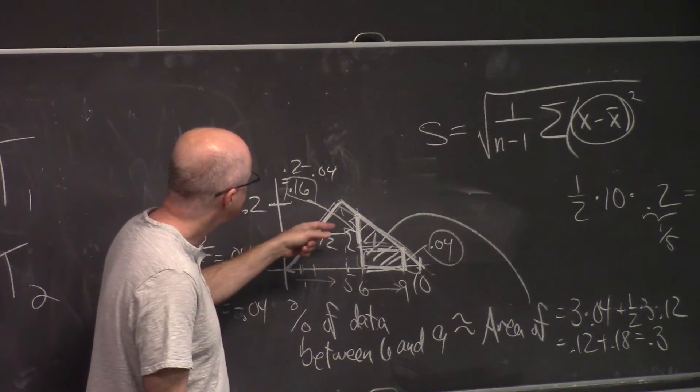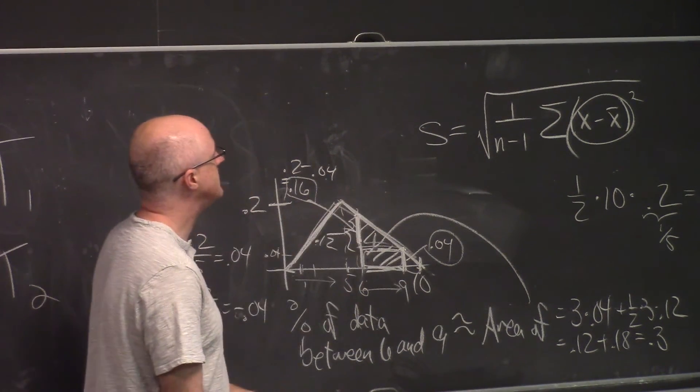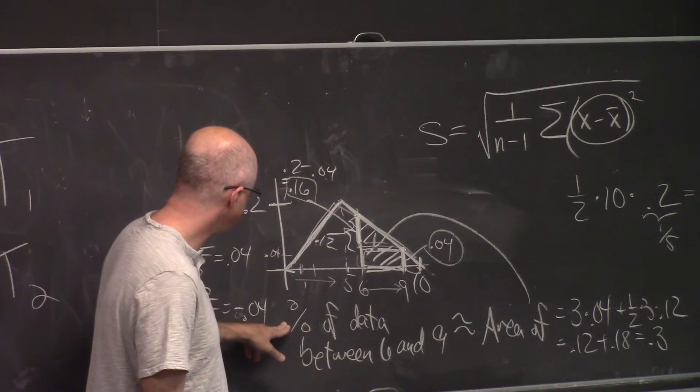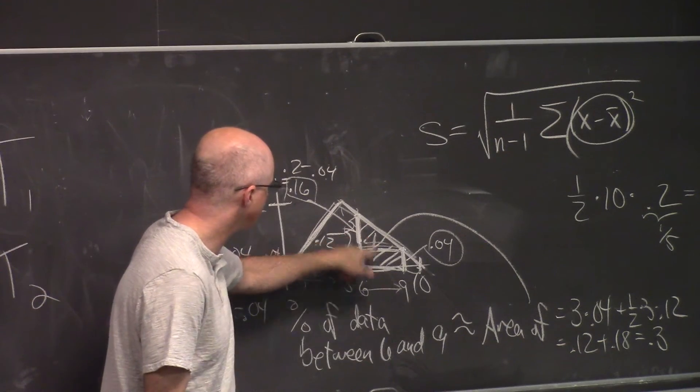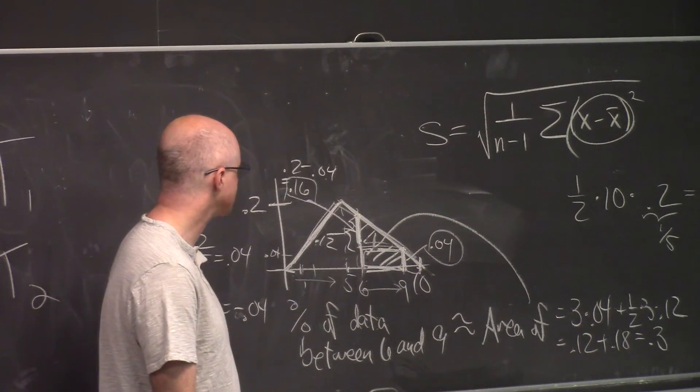The point is to calculate the approximate percentage of data that's between two numbers, find the area under the curve between those two numbers as an approximation for the answer.